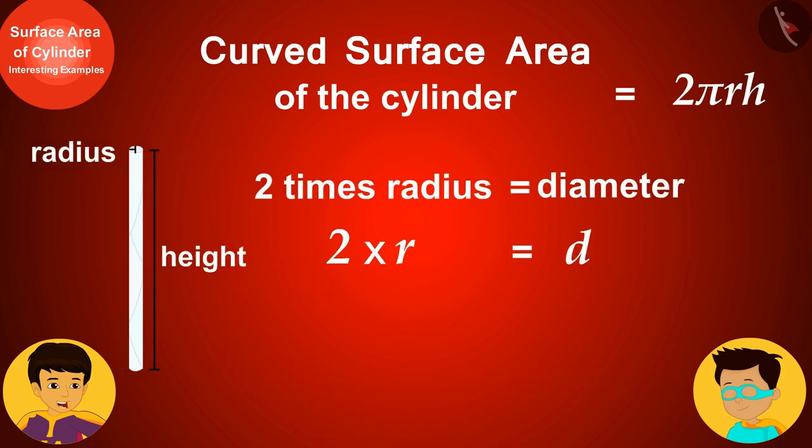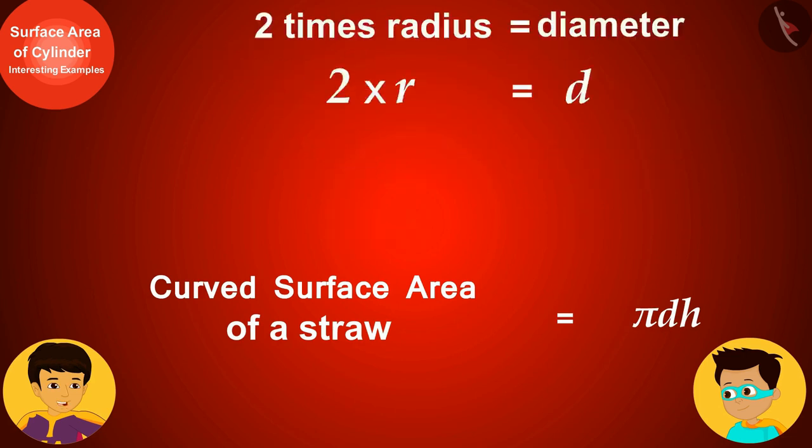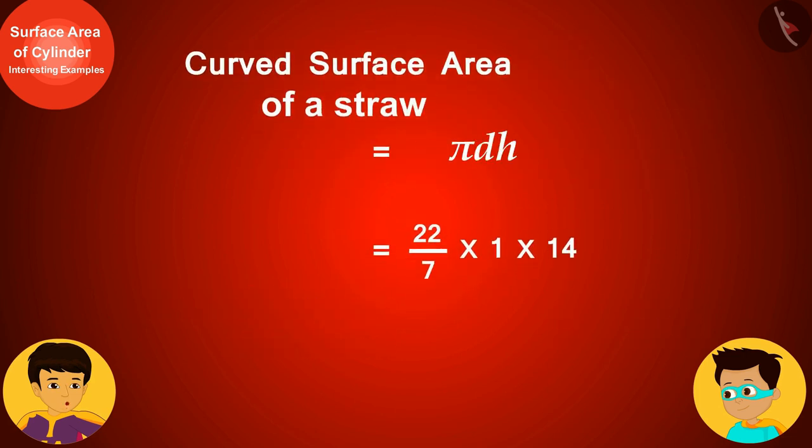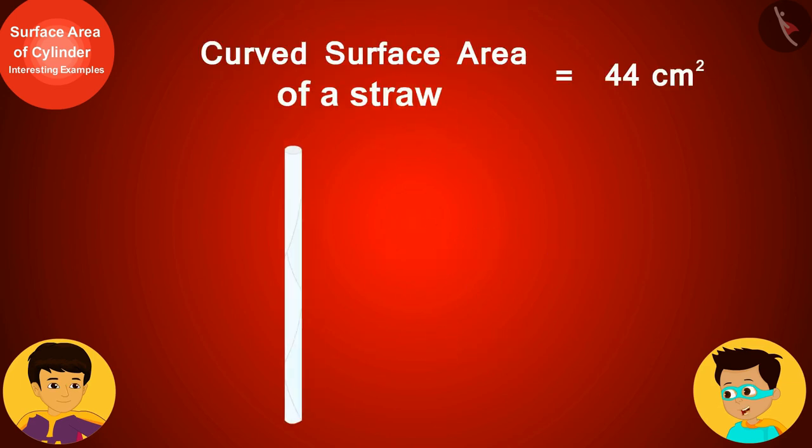But 2 times the radius is equal to the diameter, so now to find the curved surface area of the straw, we just have to write its diameter and height here. Look, the curved surface area of a straw is 44 square centimeters.